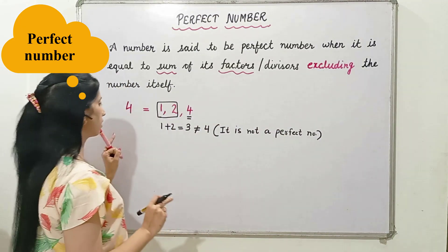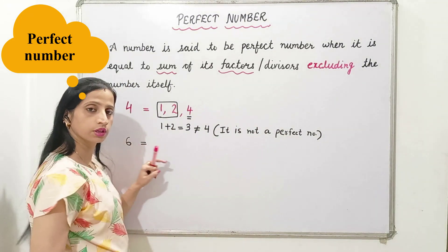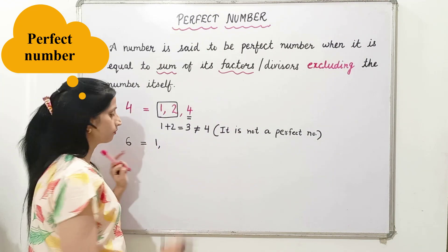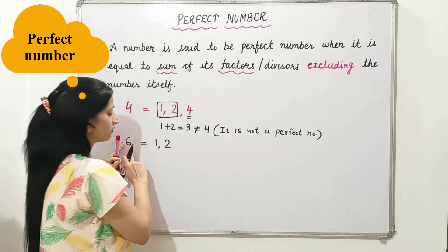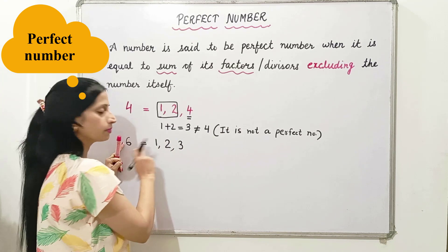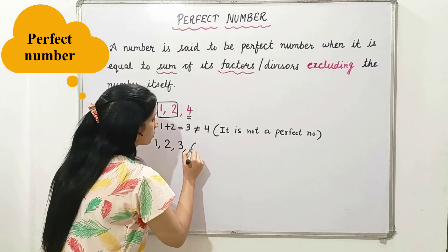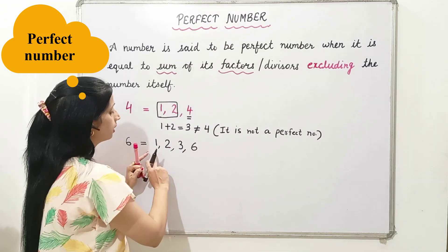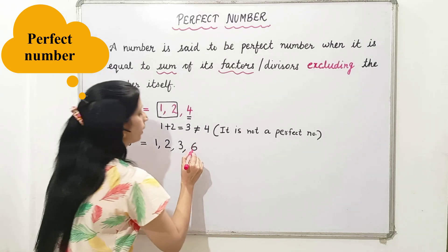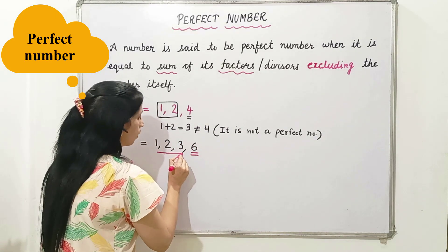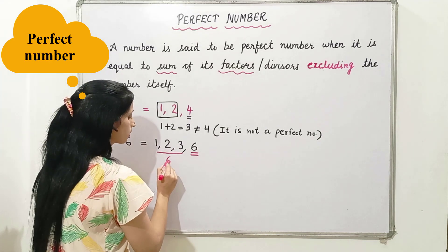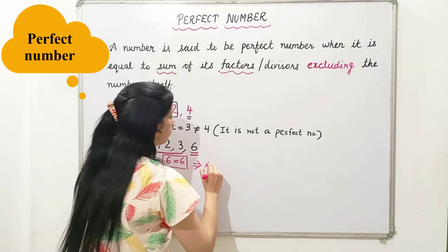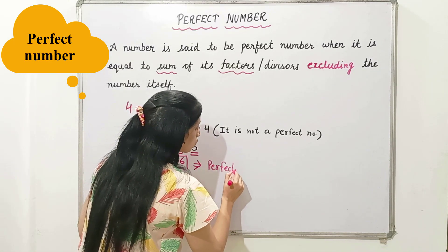Now let's take another number: 6. The first step is to write down its factors. The factors of 6 are 1, 2, 3, and 6. Now we add the factors excluding the number itself: 1 plus 2 plus 3 equals 6, which is equal to the number. Hence 6 is a perfect number, and it is our smallest perfect number.